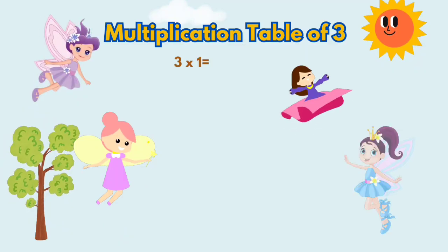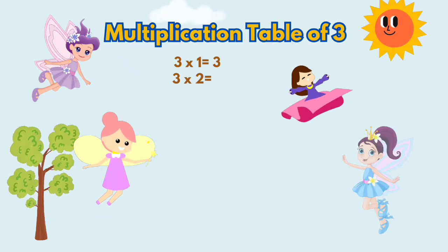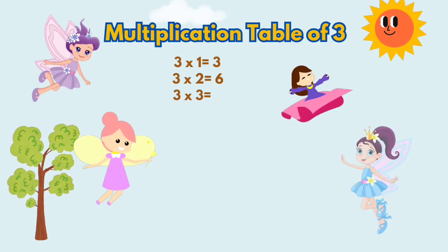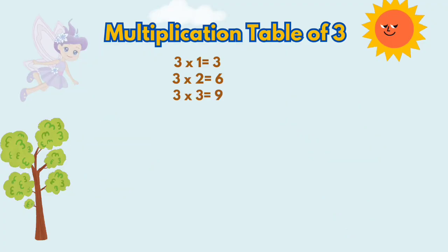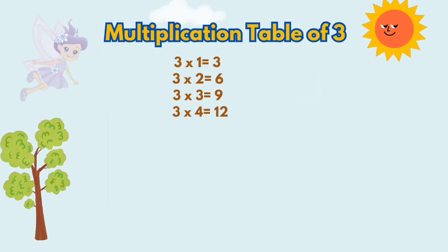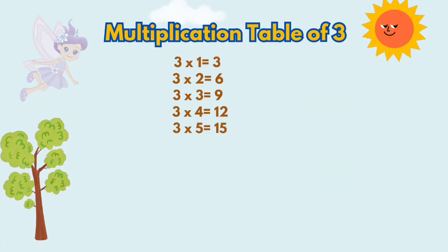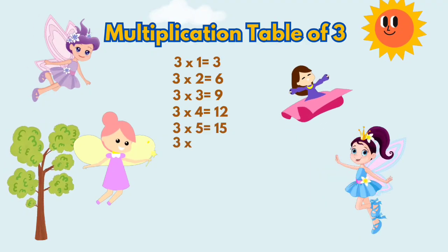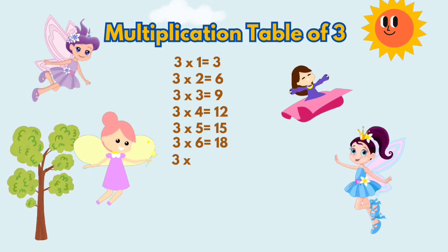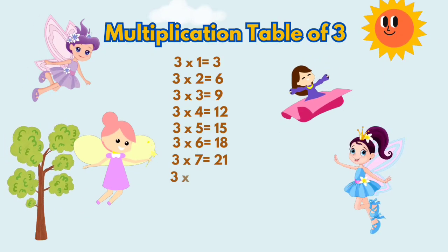3-1's a 3, 3-2's a 6, 3-3's a 9, 3-4's a 12, 3-5's a 15, 3-6's a 18, 3-7's a 21, 3-8's a 24.